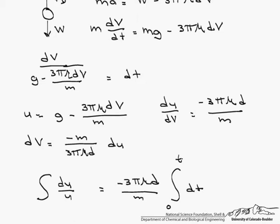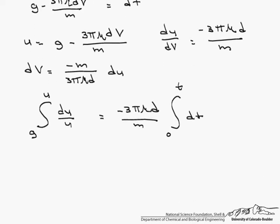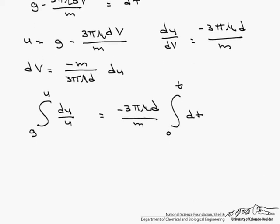However, you have to be careful on the left hand side. When we made our substitution for u, when v equals 0, u equals g, and our limits of integration are not going to go from 0 to u. They are going to go from g to u. By the way, this is only one way of doing it. There are a number of different ways that you can integrate this.